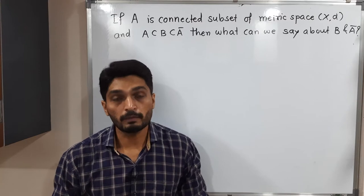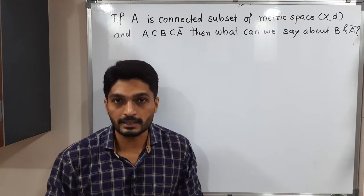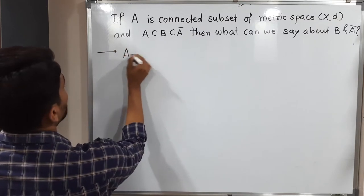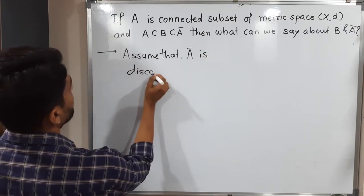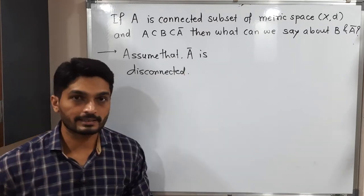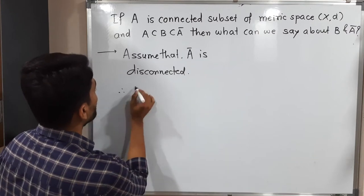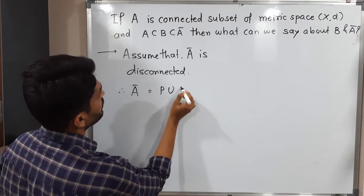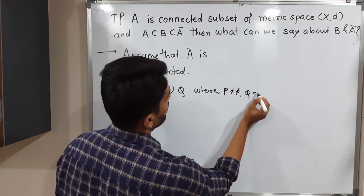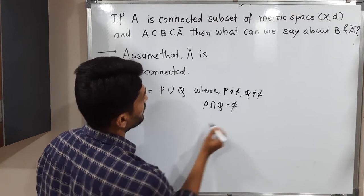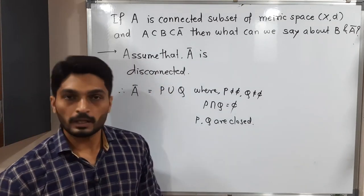First, we will check whether Ā is connected or disconnected. We initially assume that, if possible, Ā is disconnected. We have seen several equivalent definitions of disconnected sets, so let us use one of them. Therefore, we can write Ā = P ∪ Q, where P and Q are both non-empty, P and Q are disjoint, and P and Q are both closed sets.